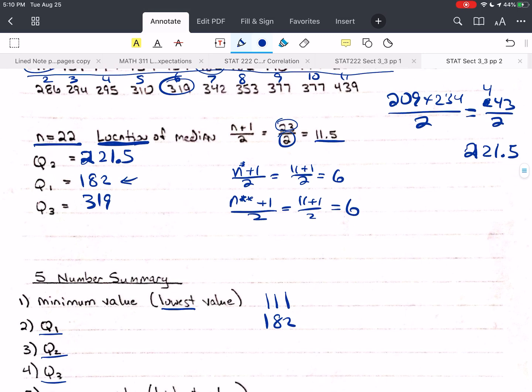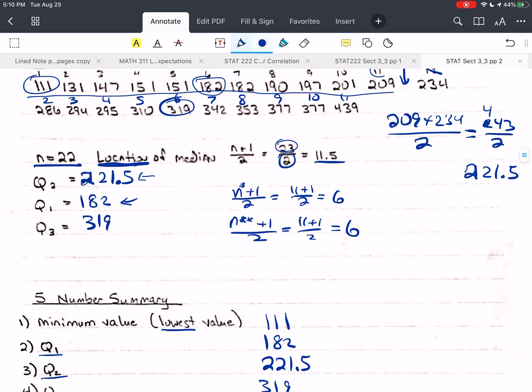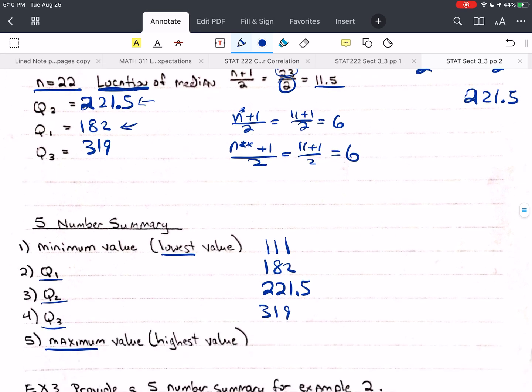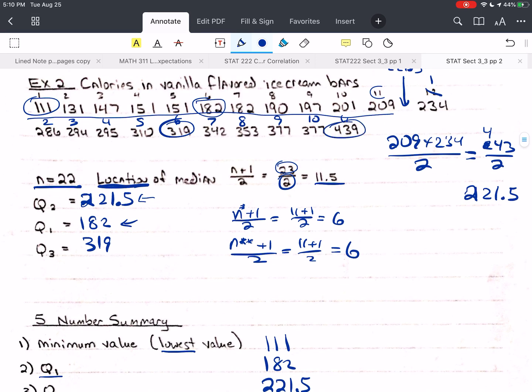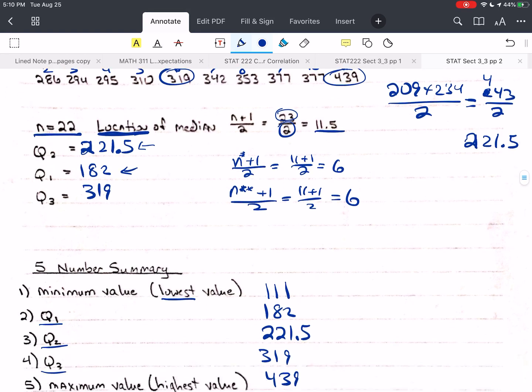Q1 is going to be, we've got that as 182. Q2, we did that as 221.5. And Q3, we said was 319. And the maximum is going to be 439, or the maximum or highest value. Whichever you want to call it, it's fine.